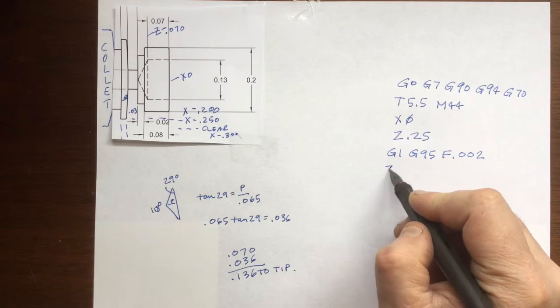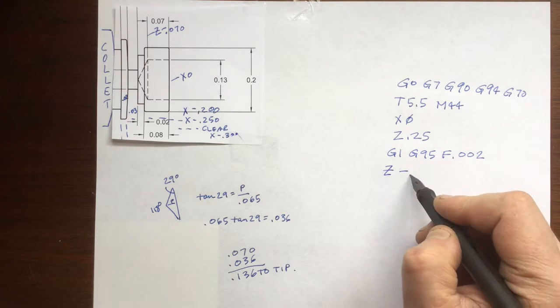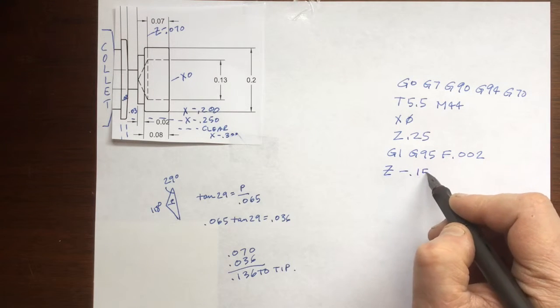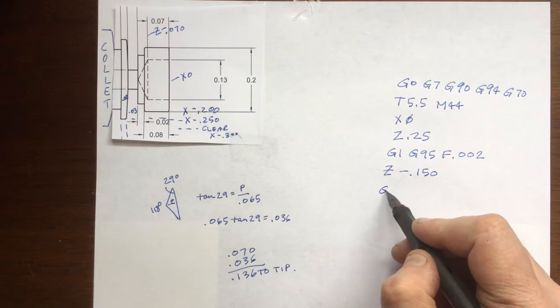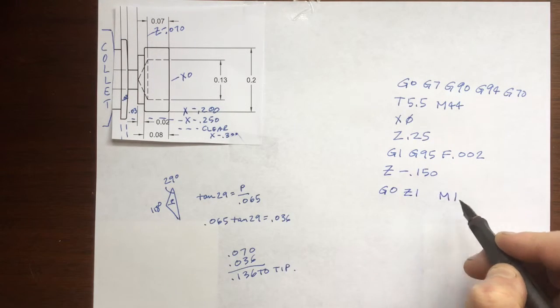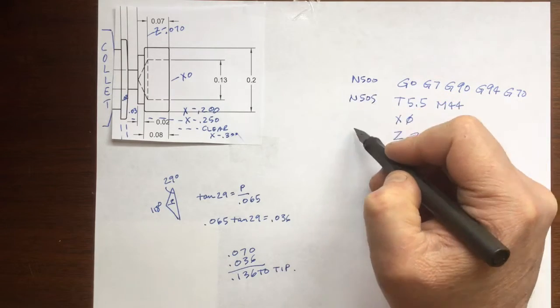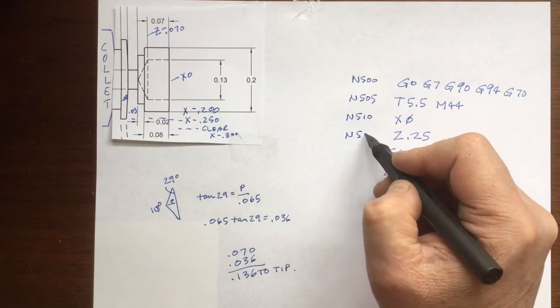Okay, the tool path is easy. Get to the center, go down enough to make your hole, and wrap it out. And I'm putting in line numbers starting with N500.